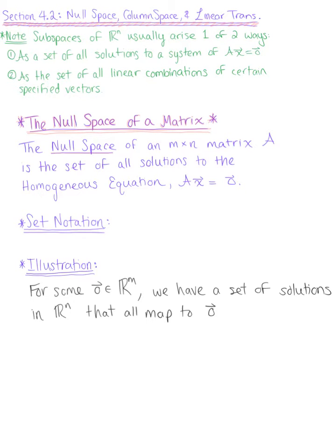So the first thing we're exploring is the null space of a matrix. The null space of an m by n matrix A is the set of all solutions to the homogeneous equation matrix A times vector x equals the zero vector.